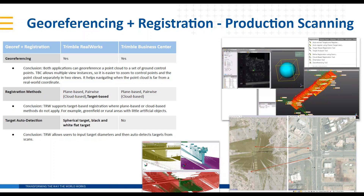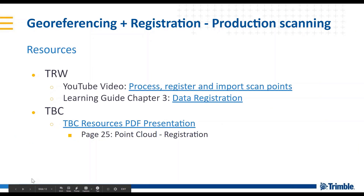There are a ton of tools inside RealWorks to help on really tough projects. And like Joe said, where it really shines is on big projects — hundreds of scans in a day or thousands of scans in a project — to automatically find all those targets for you. More resources on geo-referencing and registration are available from TBC and RealWorks.